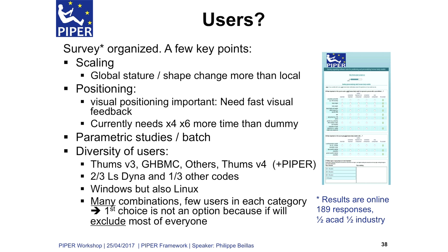We organized a user survey — many of you answered at the beginning of the project. The data is from 2013-14. Key findings: people are mostly interested in global stature and shape change rather than local changes — different anthropometries, body weight. Positioning was largely based on visual estimation of interaction with the environment. At the time, it was taking two to four to six times longer to position an HBM than a dummy.